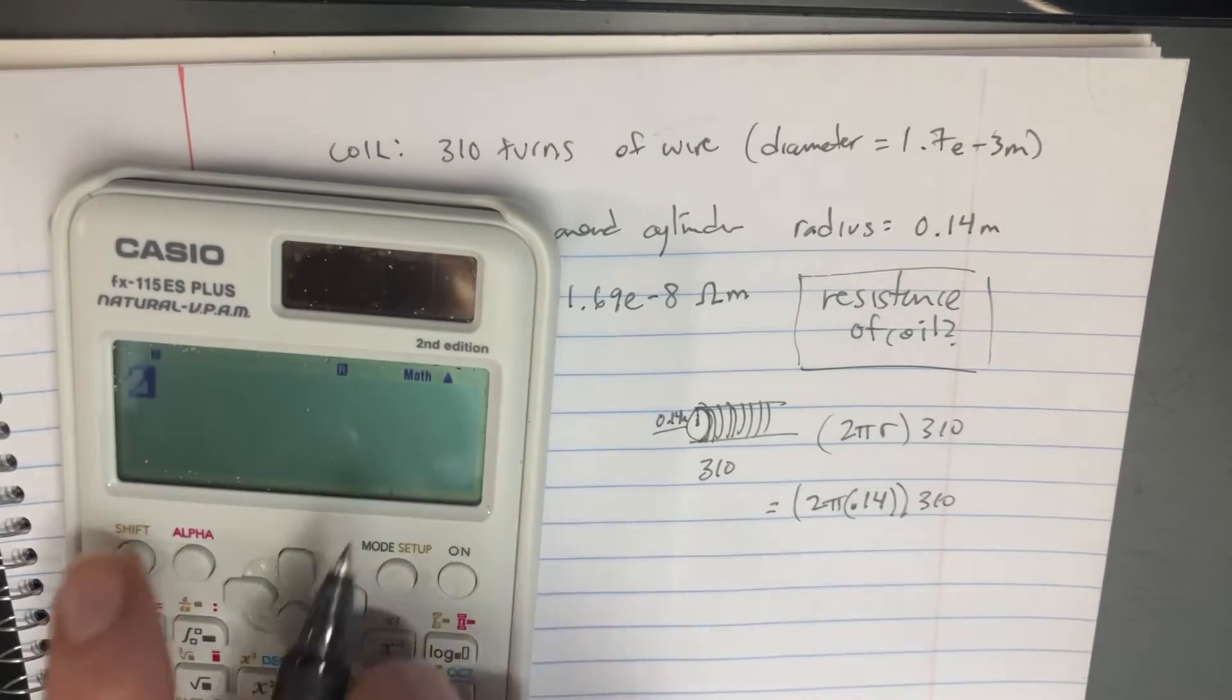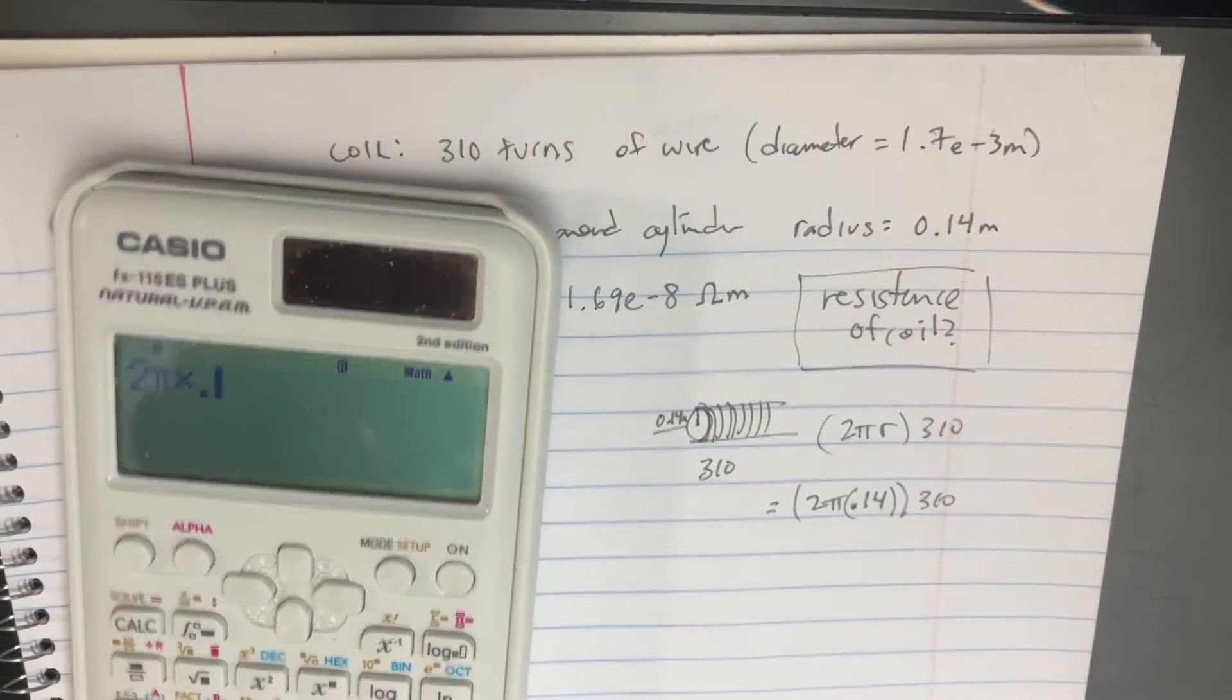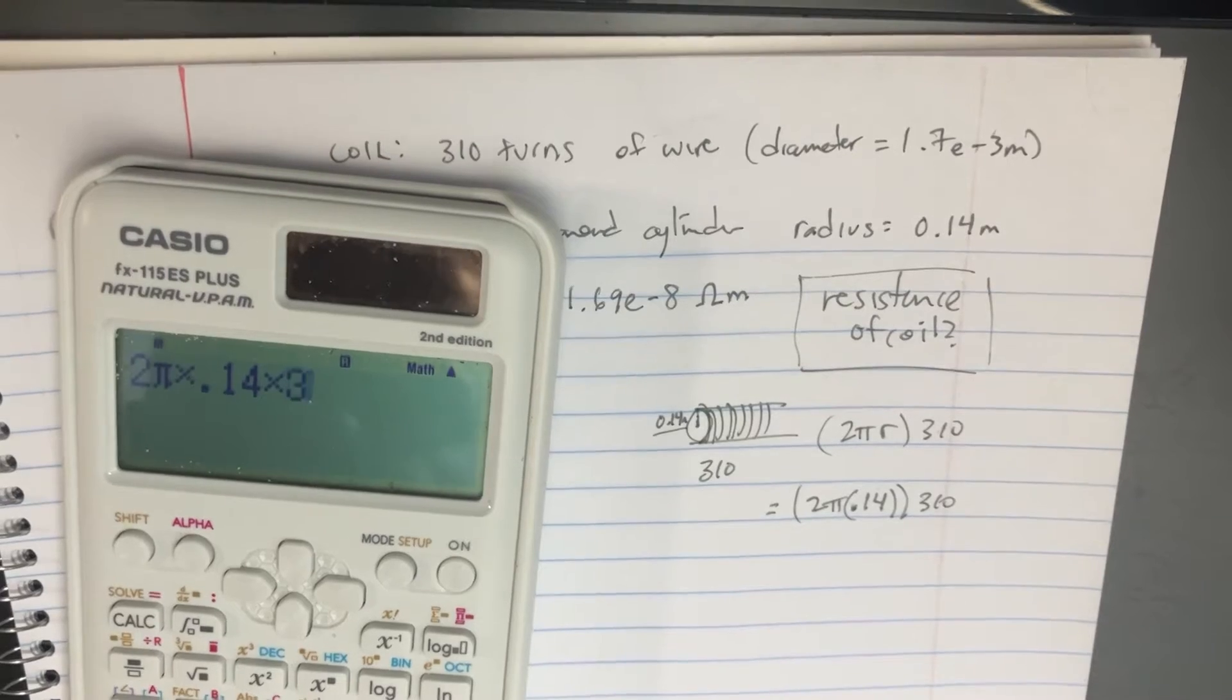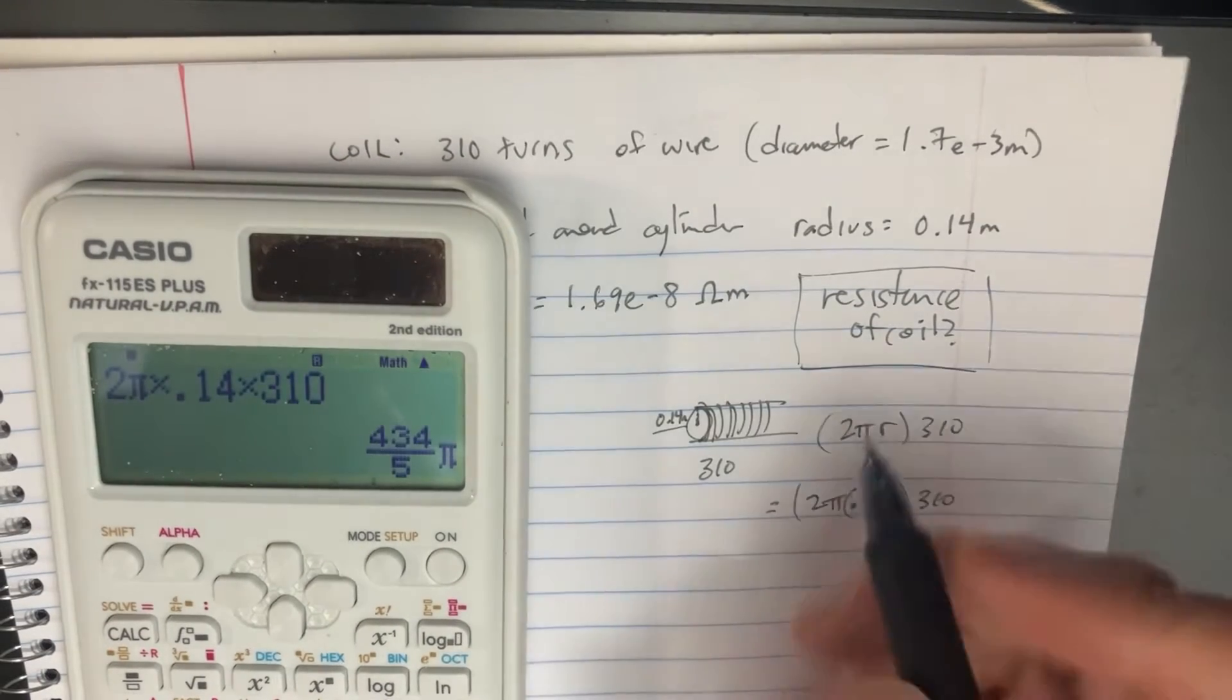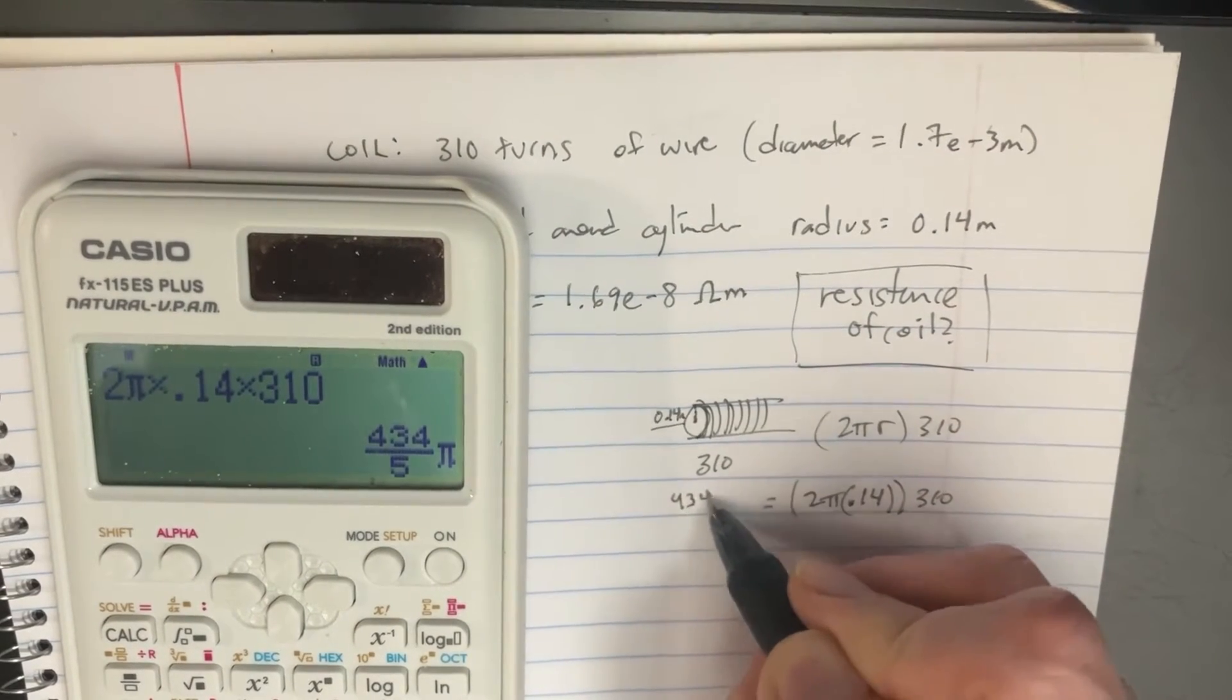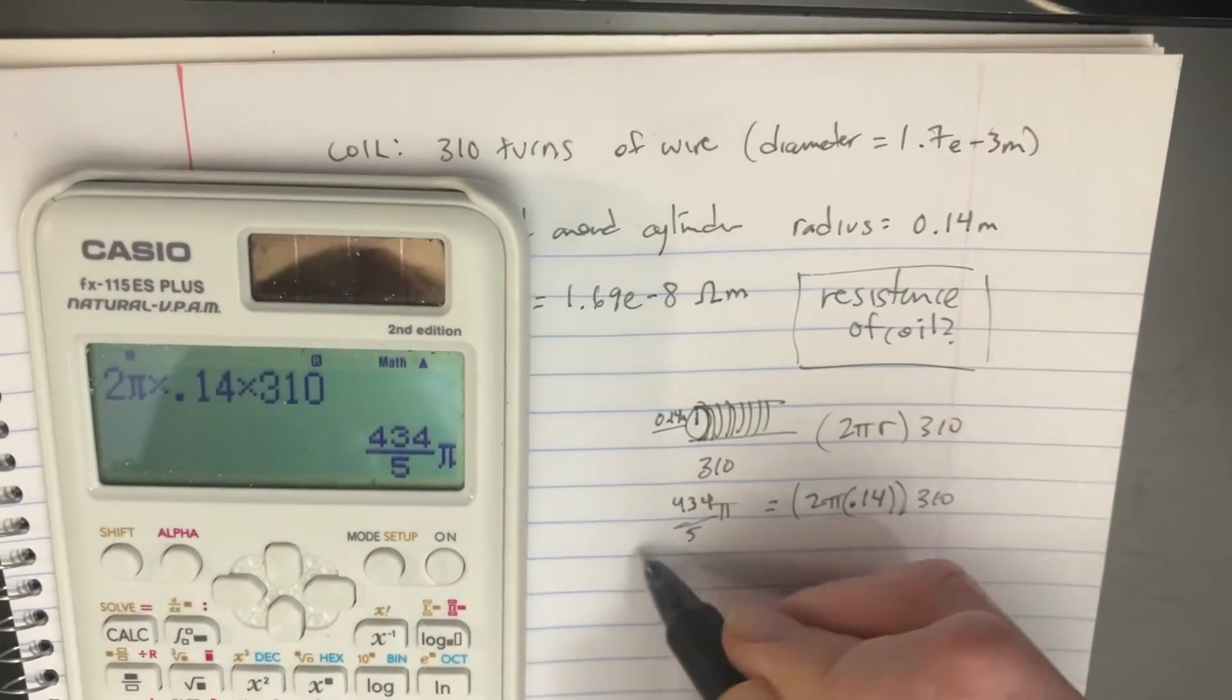So 2π times 0.14 times 310. And so we get 434 over 5π for the length.